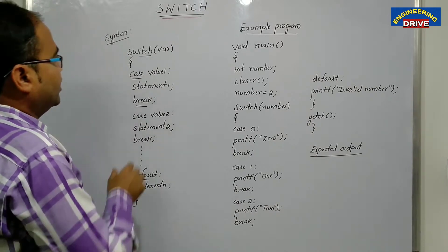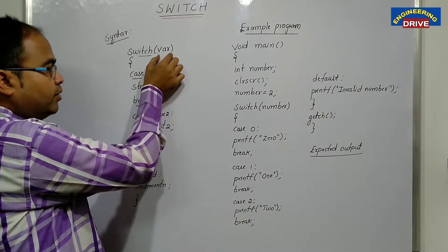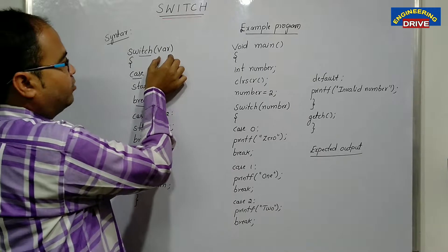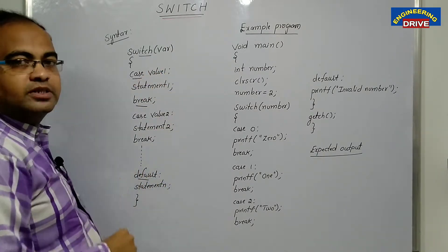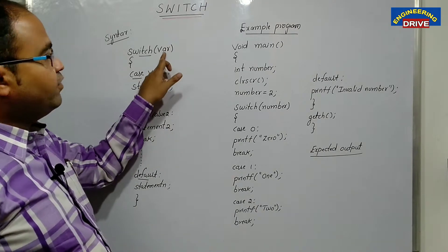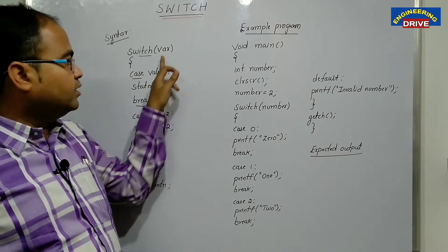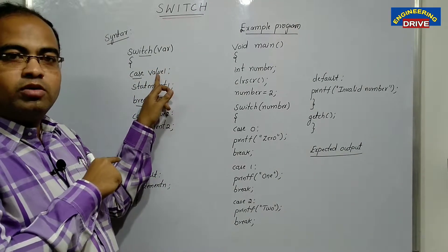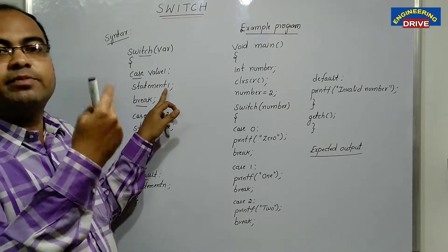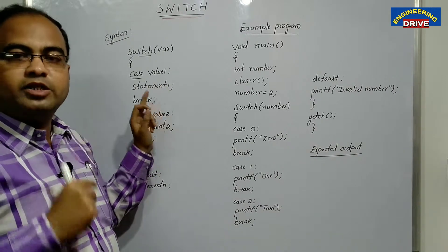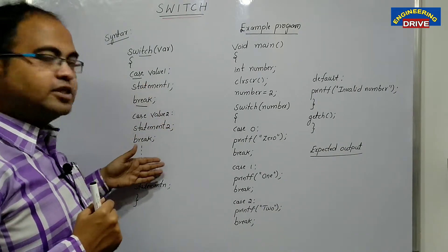Now, how the switch keyword will work means here you need to do the variable and based on that variable value, different types of cases will be selected. Suppose if you have given the variable value as value one, then control directly will go to case value one. And whatever the statement you have written here, that statement will be executed and it will be displayed on the screen and remaining cases will be ignored.